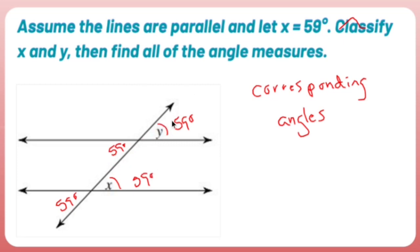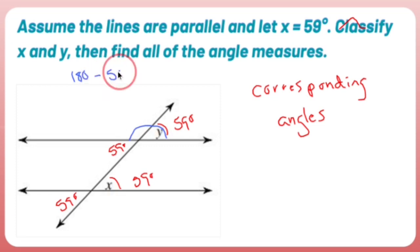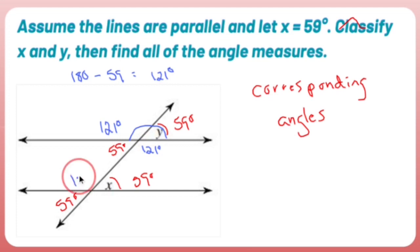The other thing too is if this is 59 degrees and I want to find these angles, y and this angle right here are glued together to form a straight angle, which means they both add up to 180 degrees. So 180 minus 59 gives me 121 degrees. That vertical angle is also 121 degrees, and alternate interior angles give 121 degrees as well.